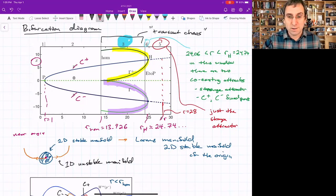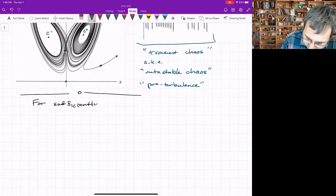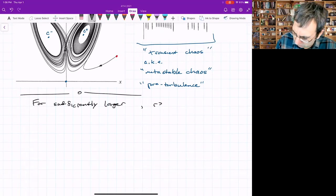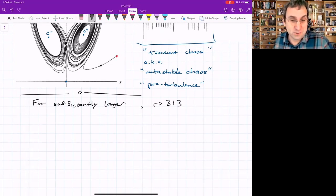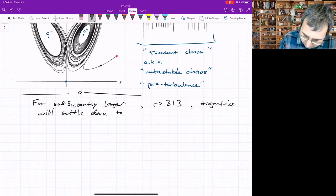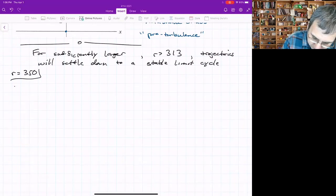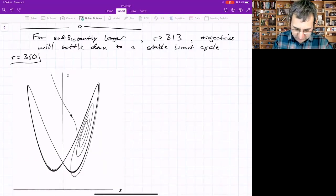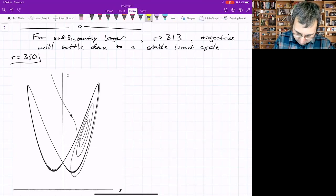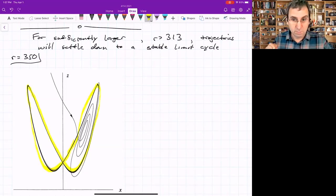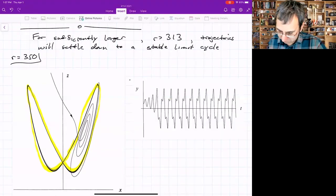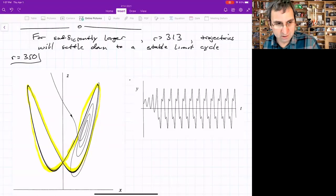What happens if we just crank up r crazy high, things will settle down to stable limit cycles for sufficiently large r. And this was shown in a paper. I think it's like r greater than about 313. Trajectories will settle down to a stable limit cycle. So if we look at r equals 350, here's an example of what we're talking about. It seems to be kind of spiraling away from C plus and then it settles down to one periodic thing, which in this projection seems to intersect. In 3D, it's not. So it's going back and forth periodic cycle. If you look at the time series, this is looking at Y as a function of time. I won't even say that there's any transient chaos here. It's just, it's settling down to a stable limit cycle.